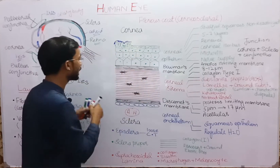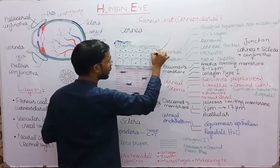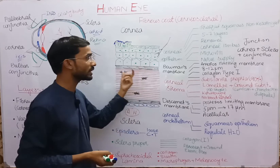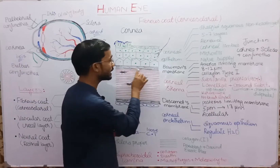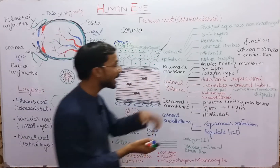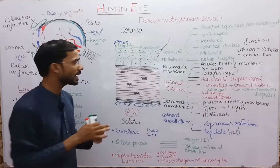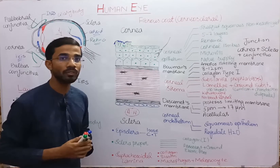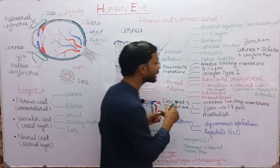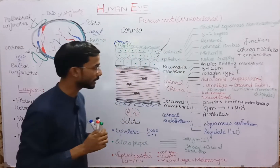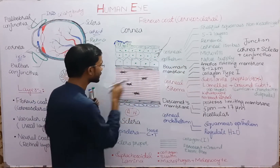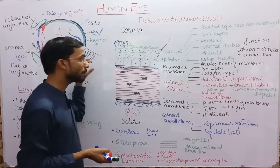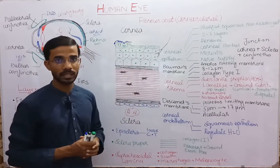Nerve endings are present in the corneal epithelium so that we can detect pain. The next layer is Bowman's membrane, also called the anterior limiting membrane — limiting because it limits entry of substances and is involved in prevention of infection. Its thickness is 8 to 12 micrometers, the fibers present are collagen type 1, and this membrane is acellular — no cells are present in this layer.